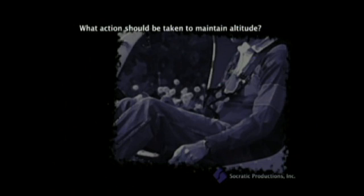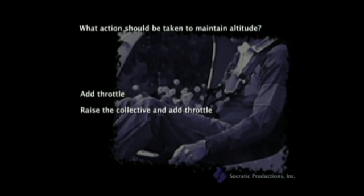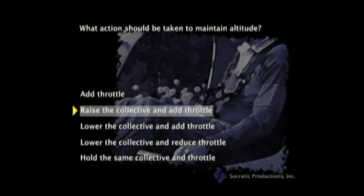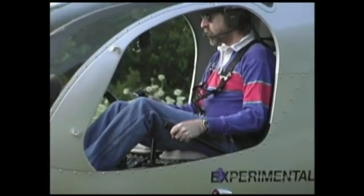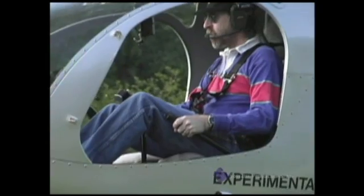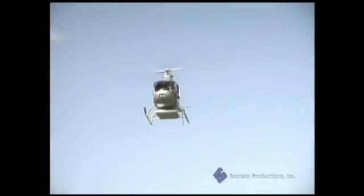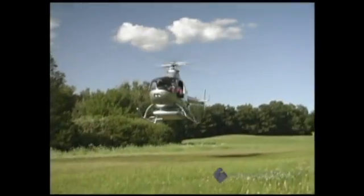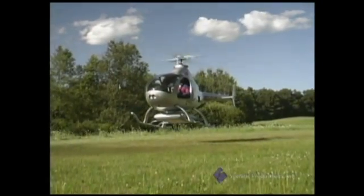What action should be taken to maintain altitude? Raising the collective and adding throttle would increase the total rotor thrust and maintain or even increase altitude and speed. To get the helicopter back on the ground, we need to move the cyclic back enough to slow down and stop, then lower the collective and reduce the throttle to settle onto the ground.